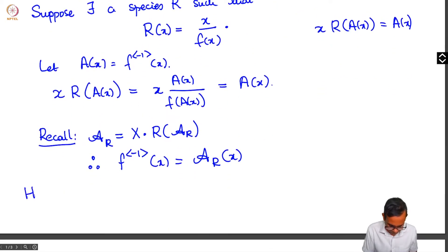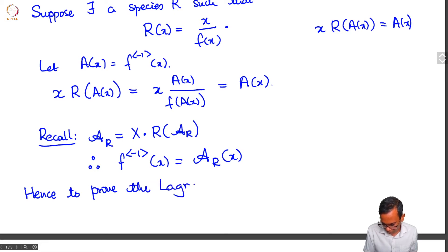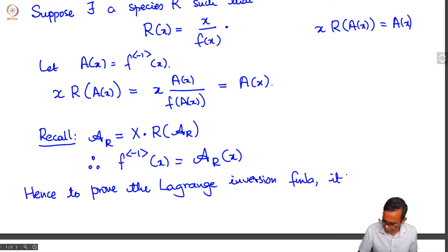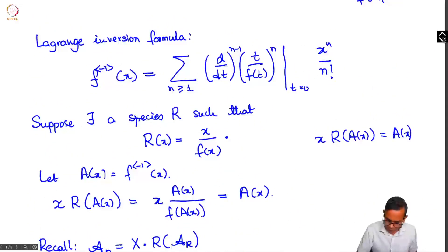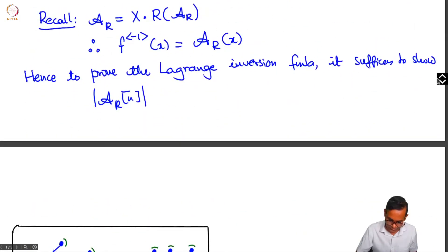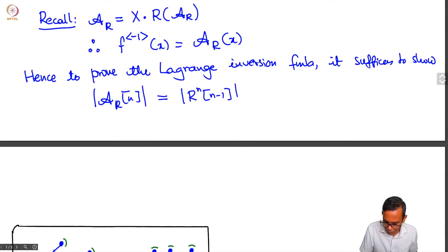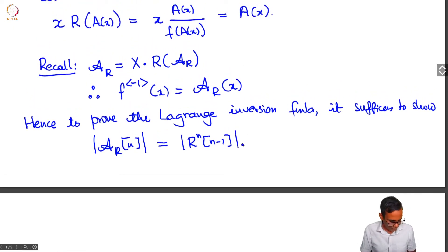Hence, to prove the Lagrange inversion formula, we need to show that the number of A_R structures on a set of size n equals the quantity (d/dt)^(n−1) of (t/f(t))^n evaluated appropriately — that is, the coefficient of x^(n−1) over (n−1)! in R^n. So this equals the number of R^n structures on a set of size n−1. We will prove this in a few steps.